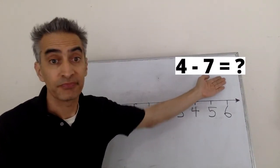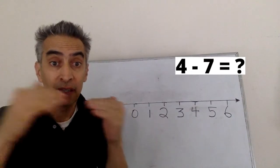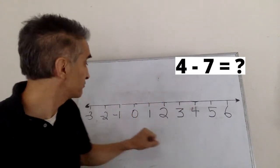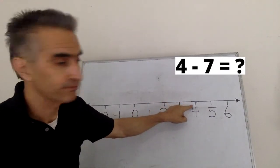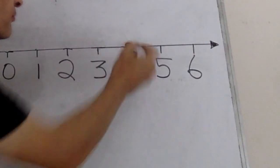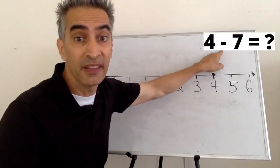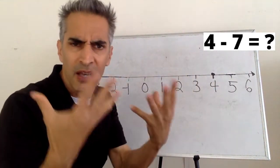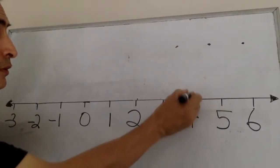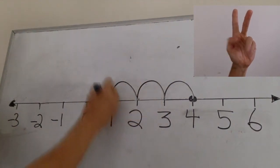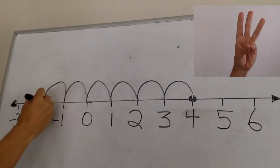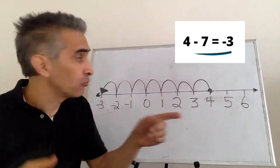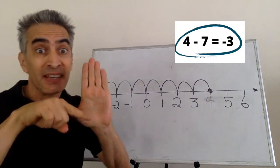Another example: 4 minus 7. We start with 4 — there it is. This subtraction sign means move to the left. How many spaces? 7. 1, 2, 3, 4, 5, 6, 7. 4 minus 7 equals negative 3.